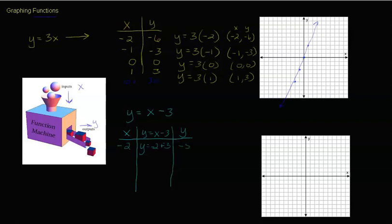So negative 2 minus 3 gives us negative 5. Then negative 1: y equals negative 1 minus 3, adding the opposite, which is negative 4. Then 0: y equals 0 minus 3, which is negative 3 — so this is not going through 0 0, it's non-proportional. And 1: y equals 1 minus 3, which is negative 2.